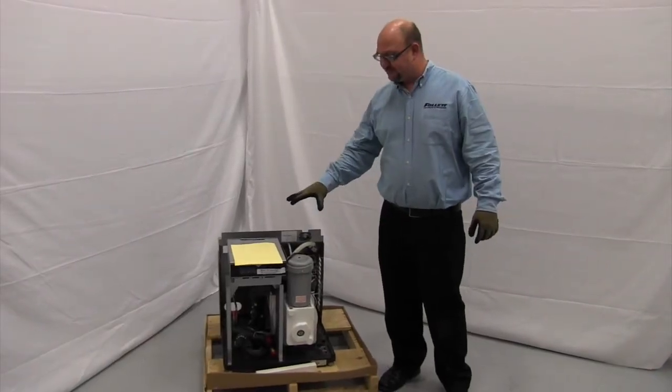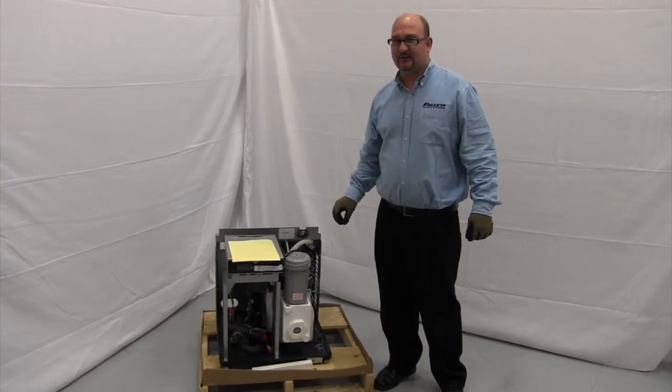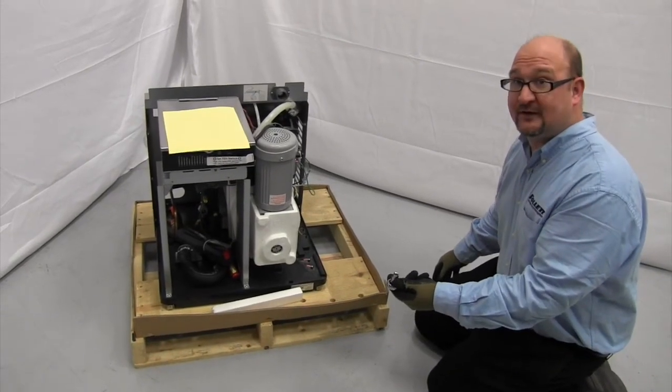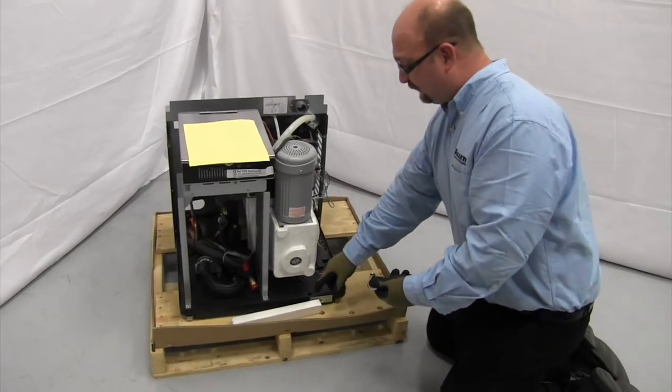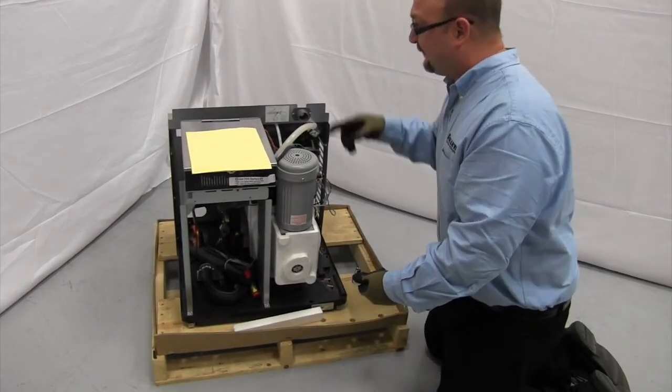Now that we've determined that there's no damage and the holding charge is still present in the unit, we're going to remove it from the pallet. Use a 7-16ths socket and ratchet to remove the two packing bolts on the front right and the back left of the unit.